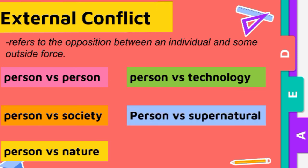The last external conflict type is person vs. supernatural. This could involve ghosts, gods, aliens, or monsters. For example, as seen in the Netflix series 'The Story of 13.'